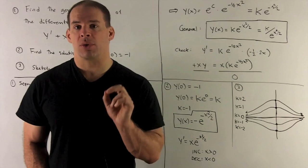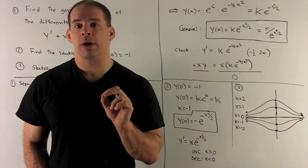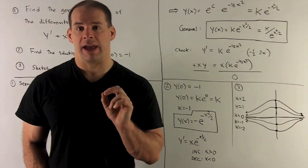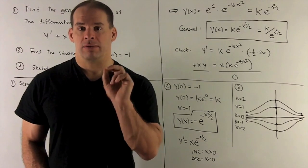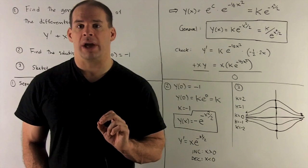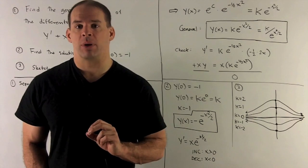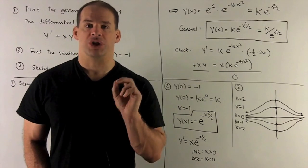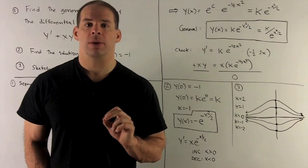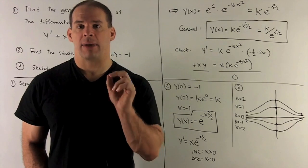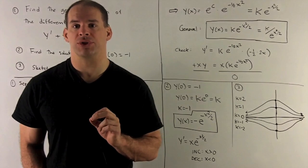Note that e to the c is always a positive number, but it's perfectly fine to let k be negative — if you put that through the differential equation, you'll still have valid solutions with a negative k. So our general solution is y of x equals k e to the minus x squared over two.